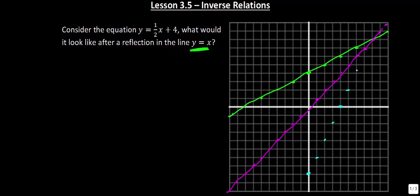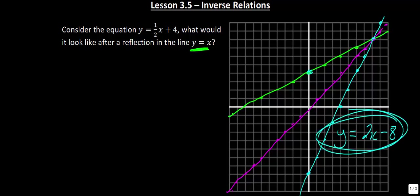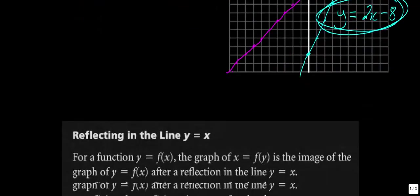You'll notice that this line goes through those points and intersects right there, and we get a line that looks like this. The interesting thing is that each one of these corresponding points — so the point at (0, 4) and the point at (4, 0) — is the same distance away from the line y equals x, so we have a mirroring effect. This line is the equation y is equal to 2x minus 8.